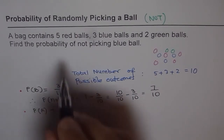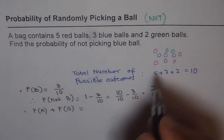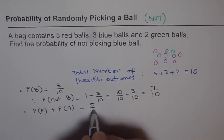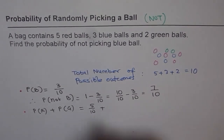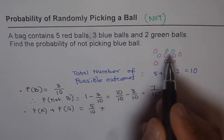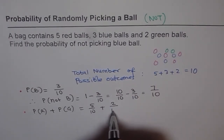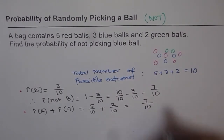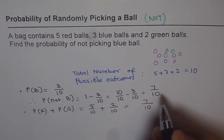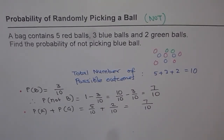Probability of picking red is five out of ten, and that of green is two out of ten — since there are two green balls. So five over ten plus two over ten gives us seven over ten. We get exactly the same answer. So when a question is like this, you could do it either way and get the same answer.